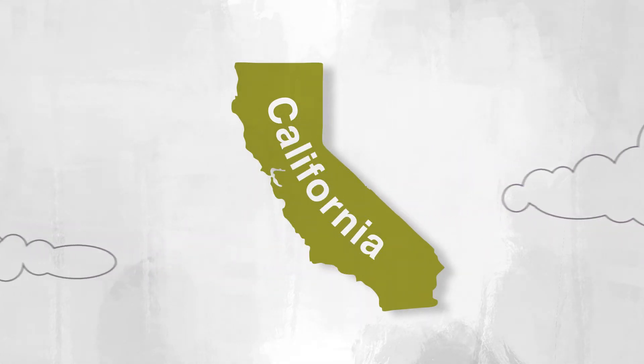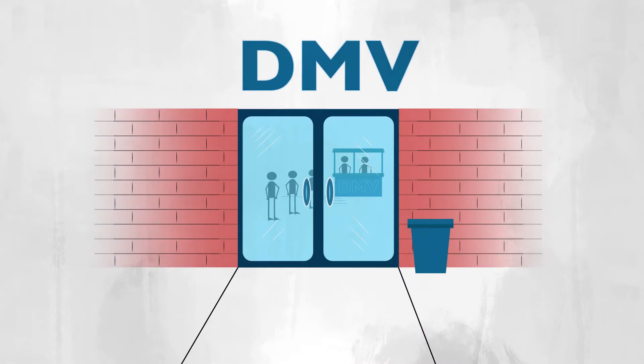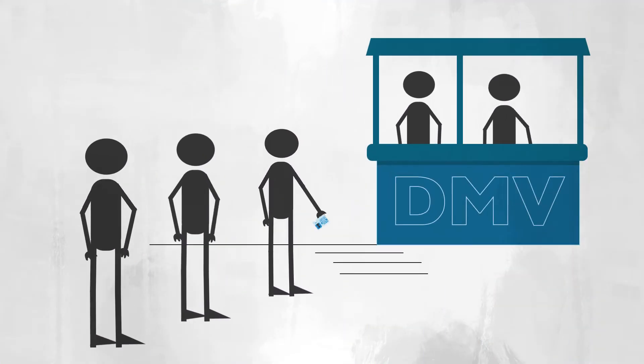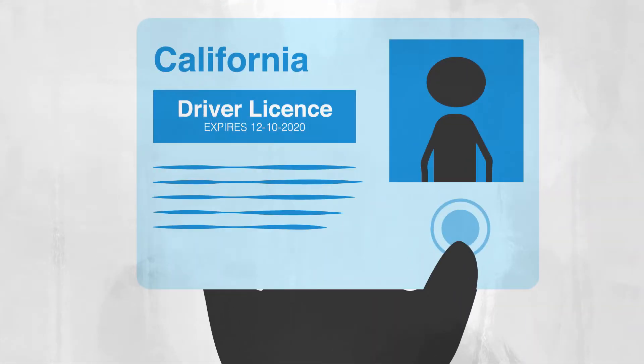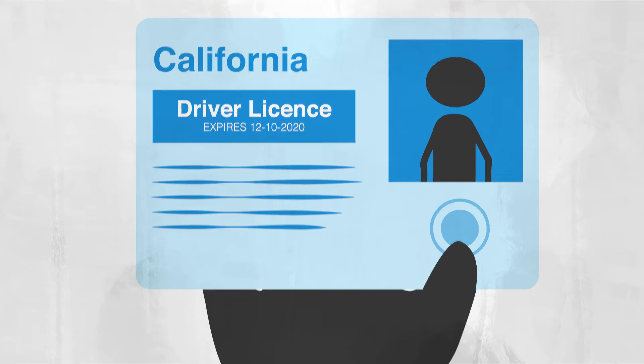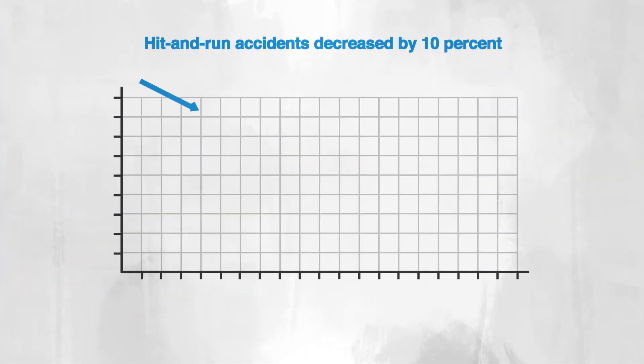That's what's happening in California, and it started at the DMV. When the state began offering driver's licenses to unauthorized immigrants, the roads became safer for all drivers.